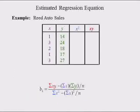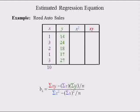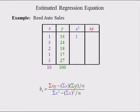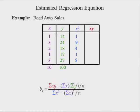Substitute the estimated intercept 10 and estimated slope 5 into the estimated regression equation. This yields Y-hat equal to 10 plus 5 times X. The equation for B1 below is an alternative way to compute the estimated slope of the regression equation — it's kind of a shortcut. The sum of the X's is equal to 10. The sum of the Y's is equal to 100. Squaring the values of X: 1 squared equals 1, 3 squared is 9, 2 squared is 4, 1 squared is 1, and 3 squared is 9.